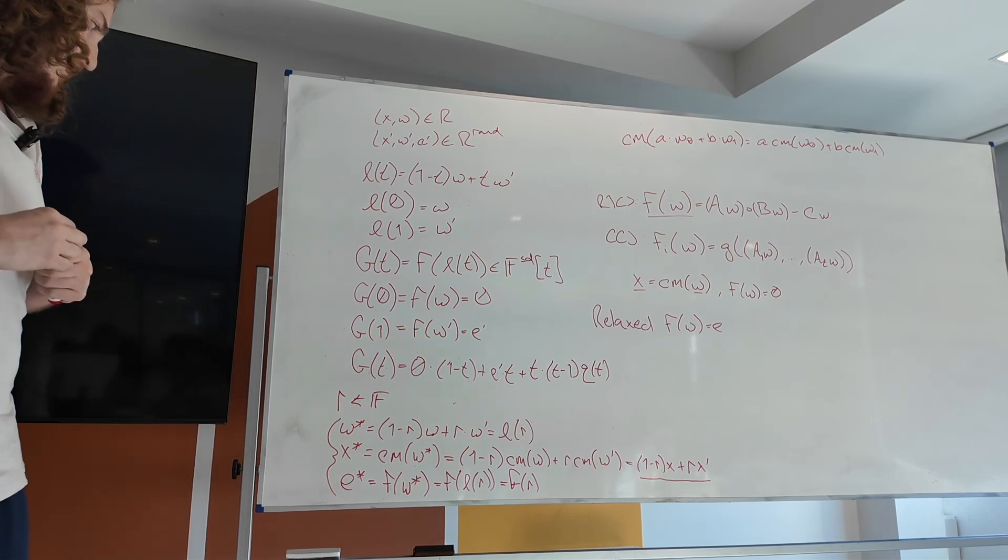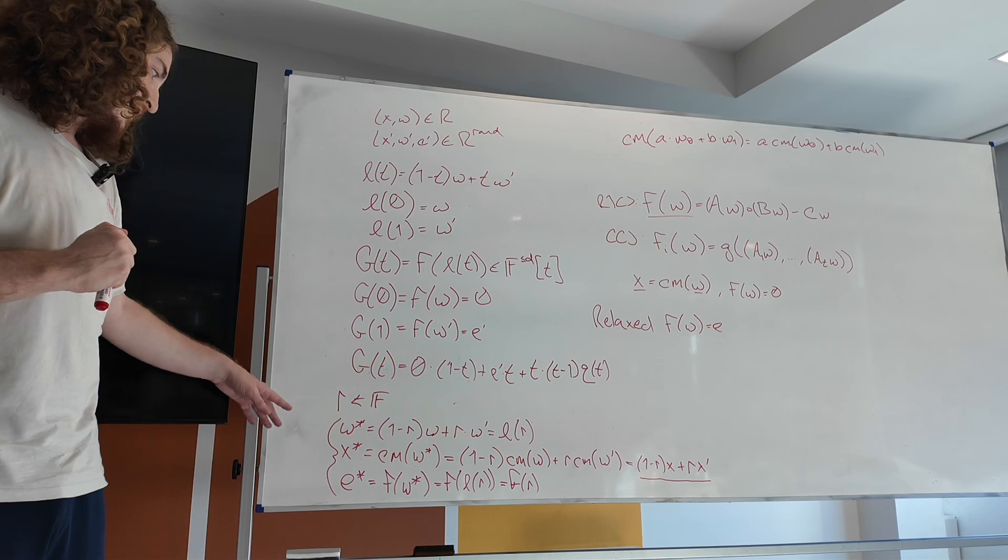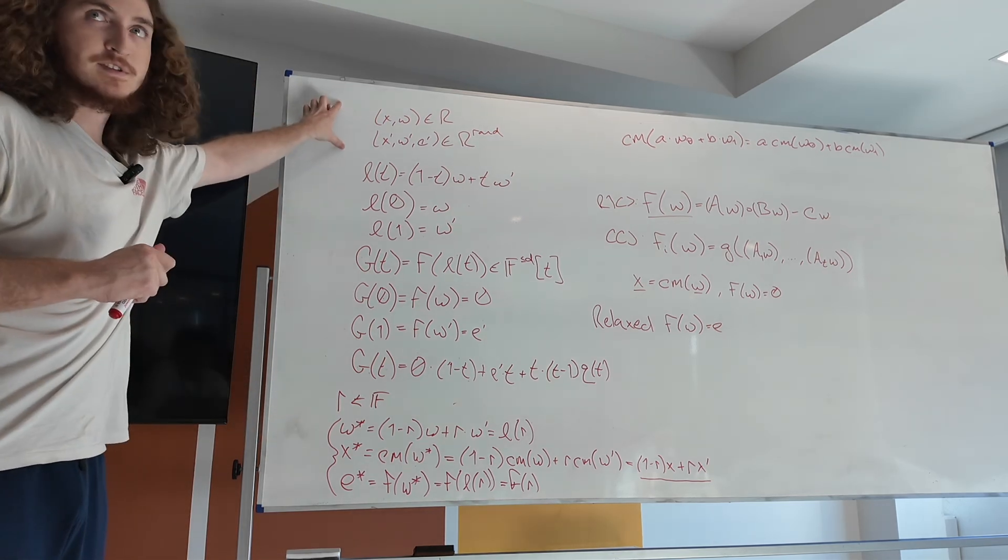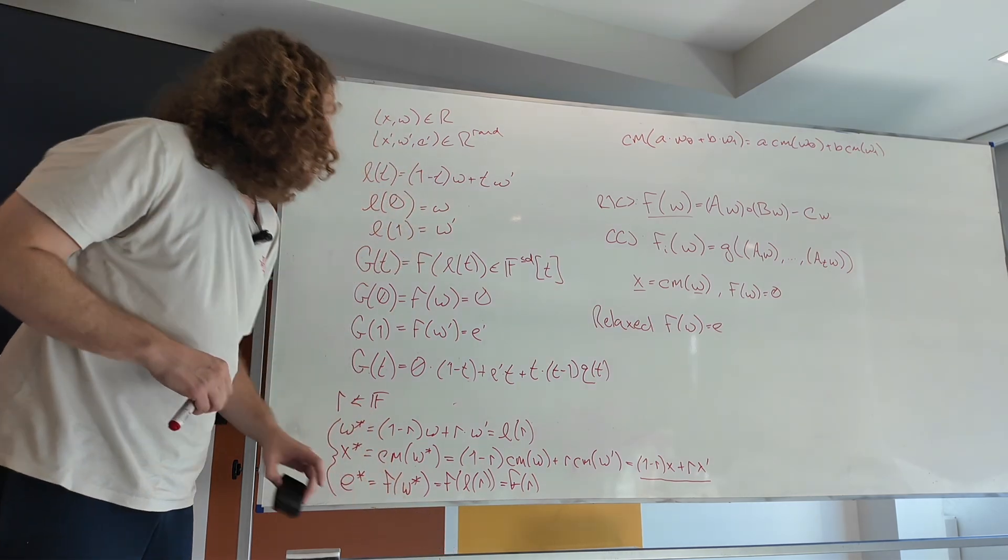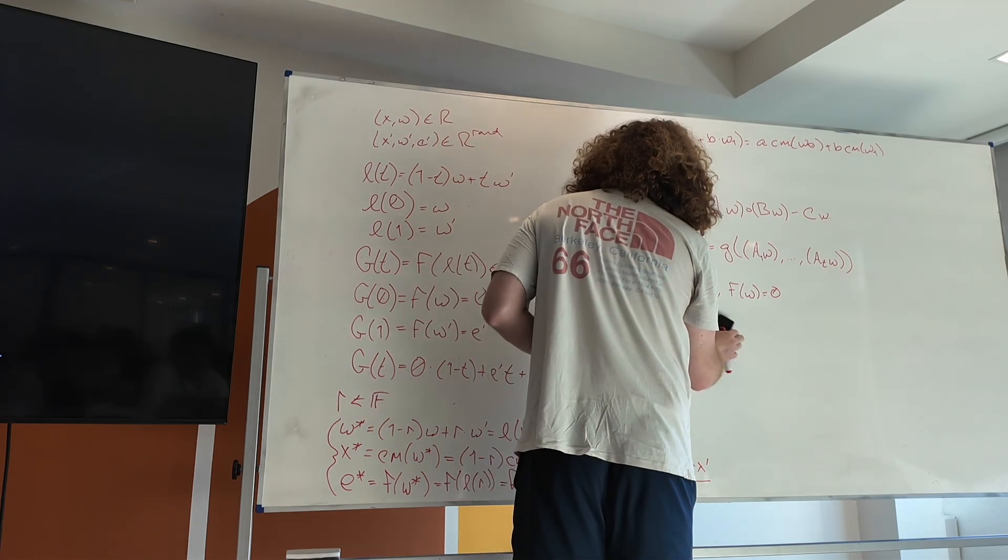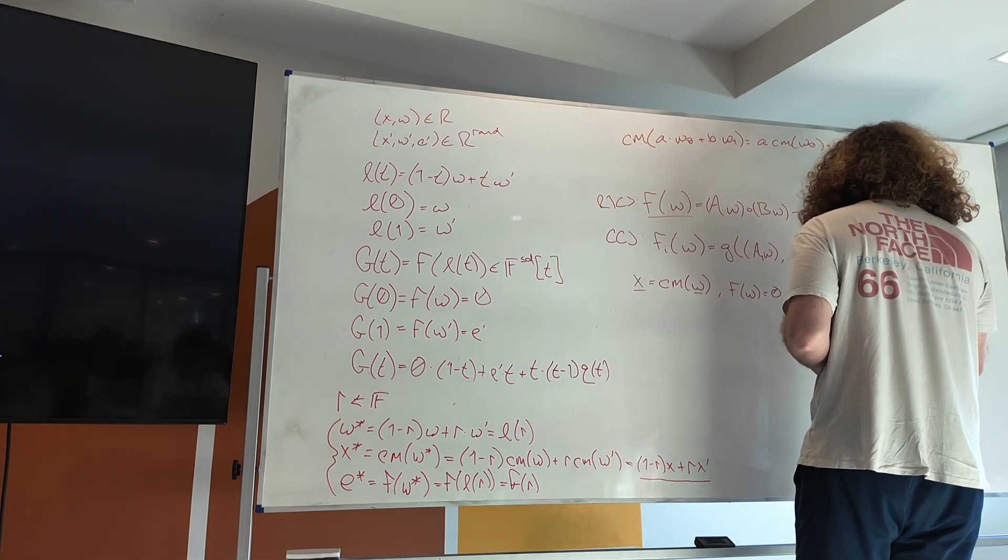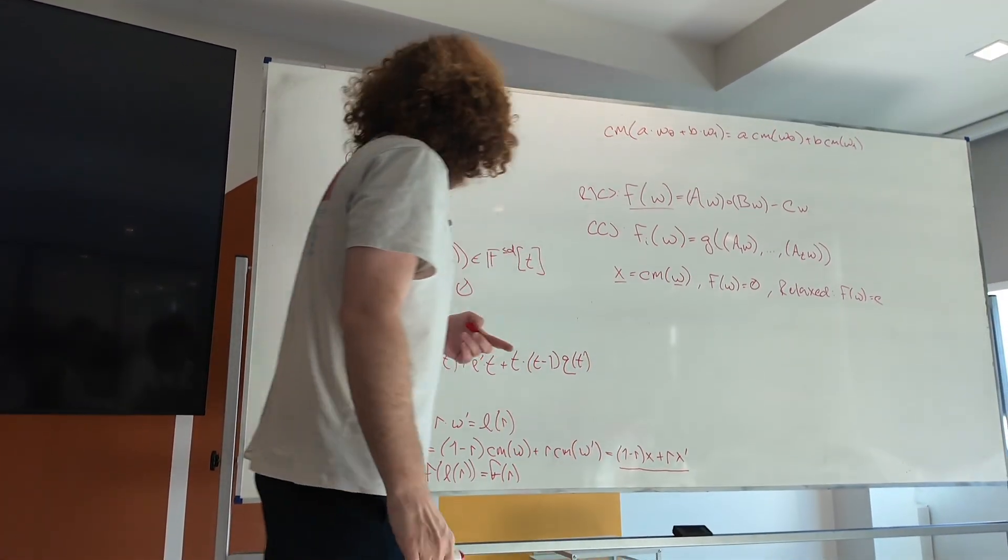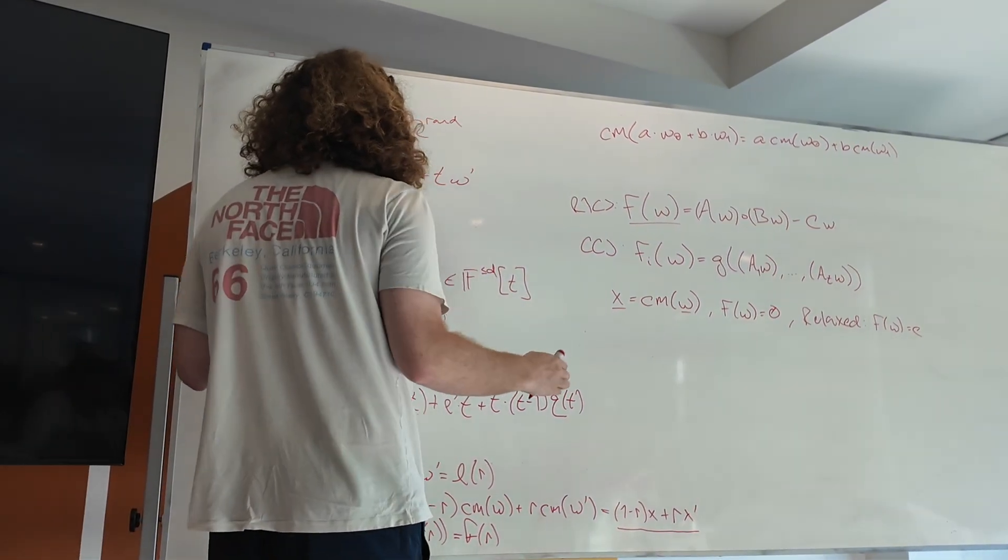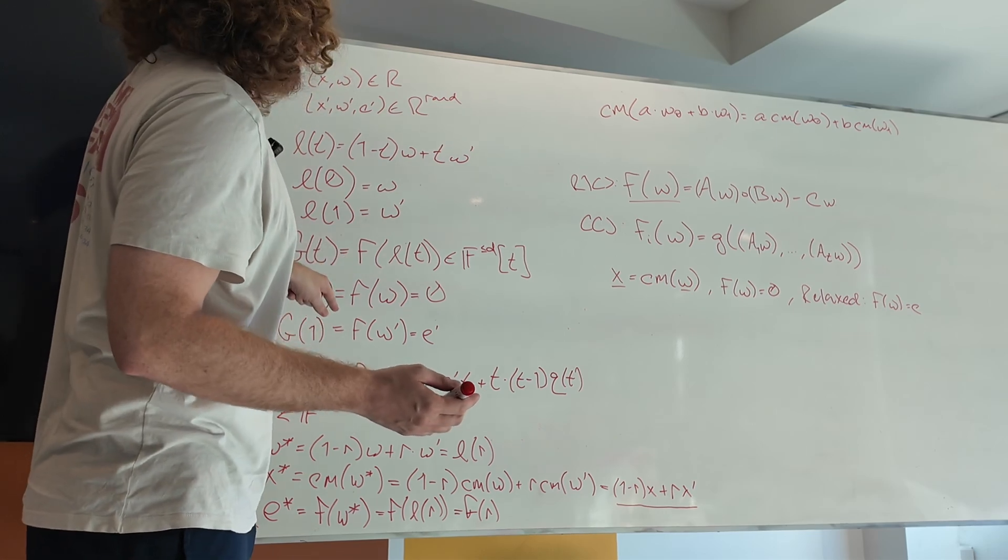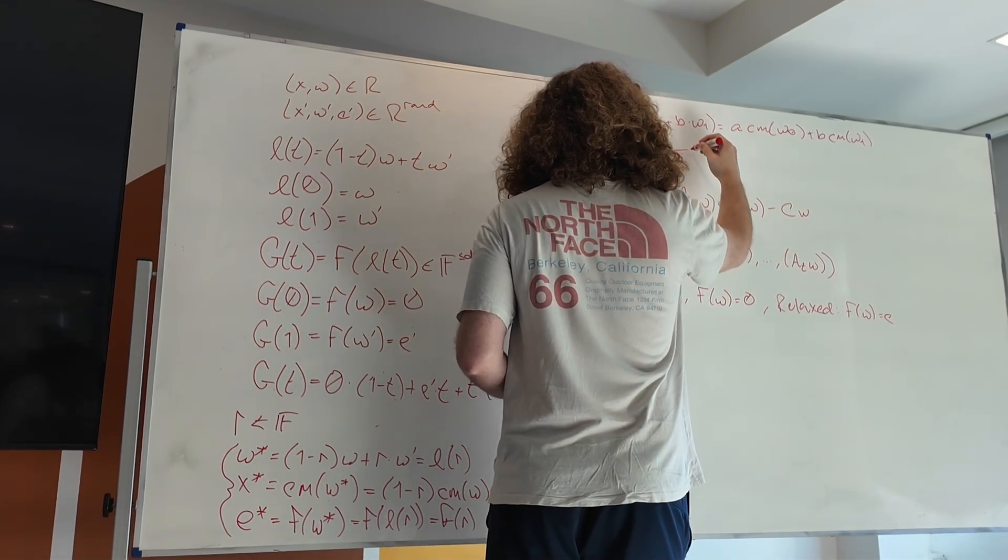The soundness proof is not that bad. It follows that if this is a valid randomized instance, then both of these belong to their respective relations with overwhelming probability. This is all protostar. There is a problem. The problem is that g does not take on elements in the field. It actually takes on vectors because f takes on vectors.